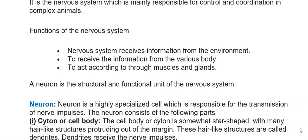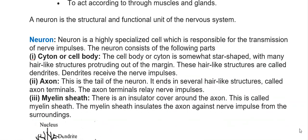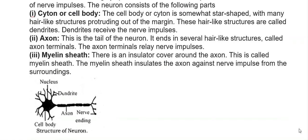A neuron is a highly specialized cell responsible for the transmission of nerve impulses. The cell body, or cyton, is somewhat star-shaped with many hair-like structures called dendrites protruding from its margin; dendrites receive nerve impulses. The axon is the tail of the neuron, ending in axon terminals that relay nerve impulses. The myelin sheath is an insulating cover around the axon that insulates it against nerve impulses from the surroundings.